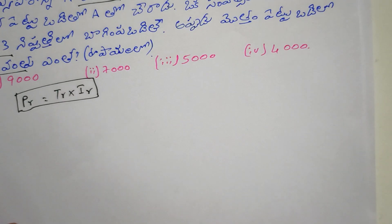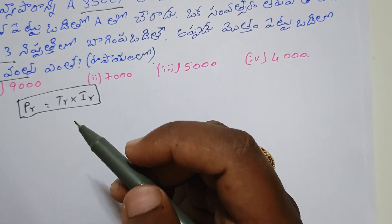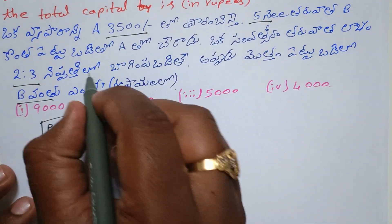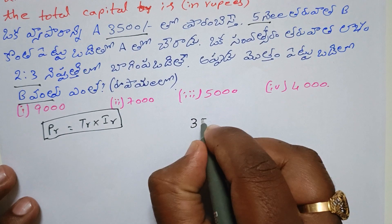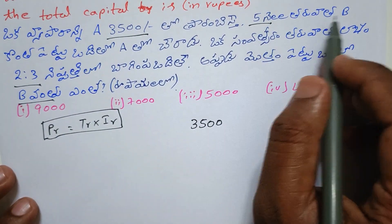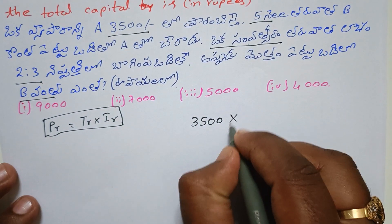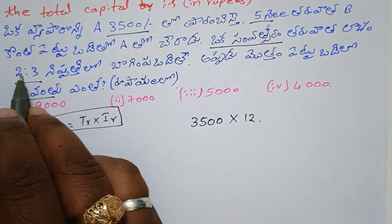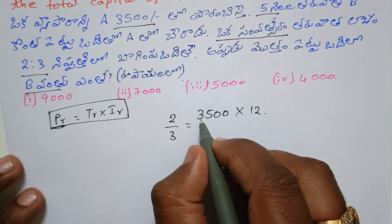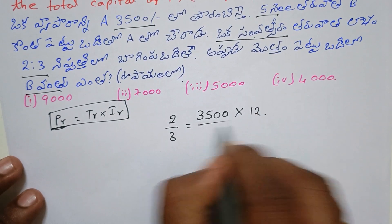A will be calculated. The time period is 14 months for A. After 14, the profit ratio for A is 2. B joins after 5 months so B's time period is 7 months. Profit ratio is 2 by 3. The investment ratio for A is 3, time ratio divided by 2.